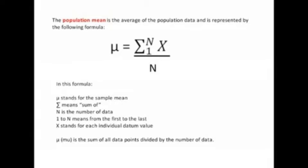Well, I'll bet this slide scared the bejesus out of you. The population mean is the average of the population data, and is represented by the following formula. Mu is equal to the sum of all x's beginning from the first one to the nth one, where n is the number of data, divided by the number of data. Dog-ass, that's a good one. Well, let's see if we can unravel that.